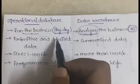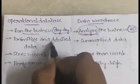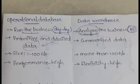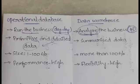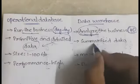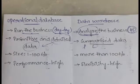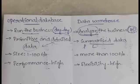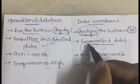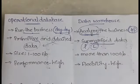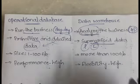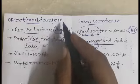An operational database has primitive and detailed data — everything about what happened today, what the profit or loss was, and which factors contributed to it. A data warehouse, on the other hand, has summarized data. It will just tell you whether there was a profit or loss and by how much, but it won't explain the contributing factors or reasons. So the database gives detailed data and the data warehouse gives summarized data.